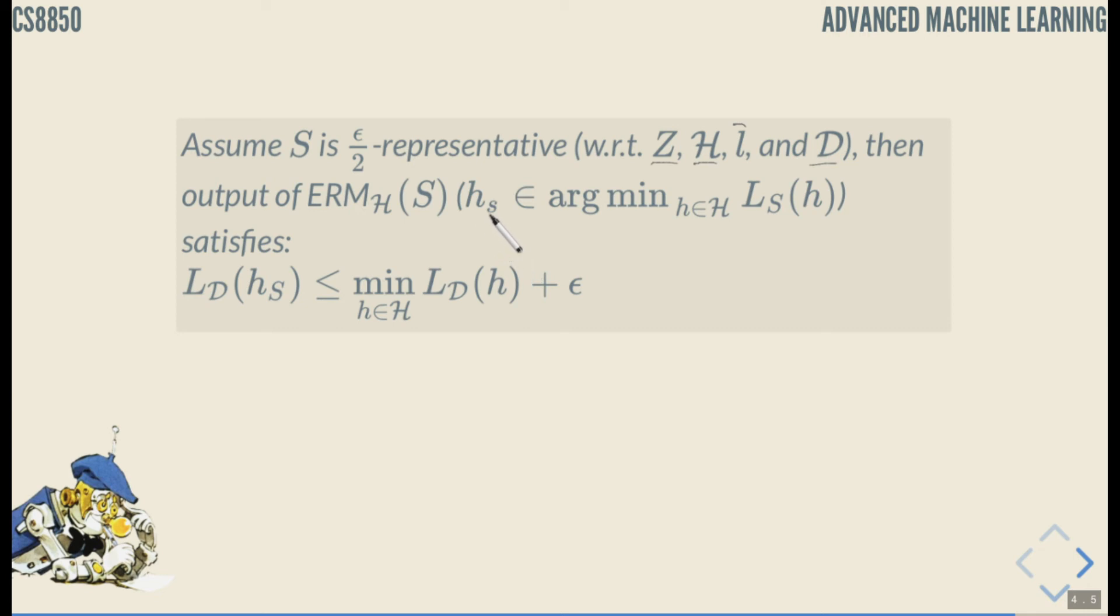Then the output of empirical risk minimization or an empirical risk minimizer on that training set S, which is H sub S or hypothesis that belongs to the minimizer, the set of hypothesis that are minimizing the loss, because there could be duplicates, the empirical loss, and it satisfies...